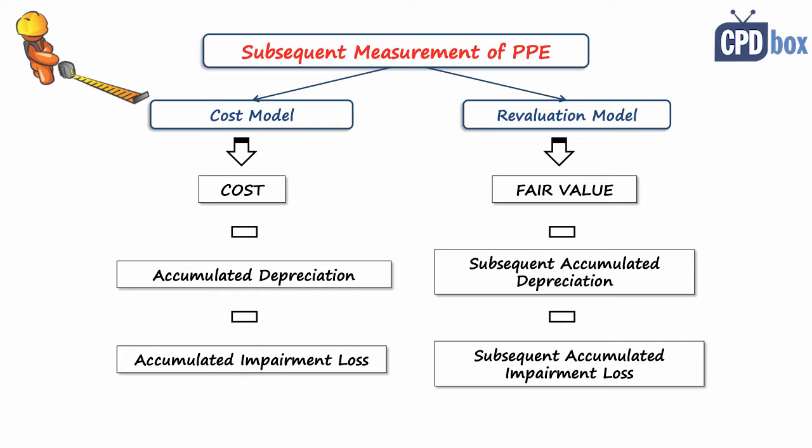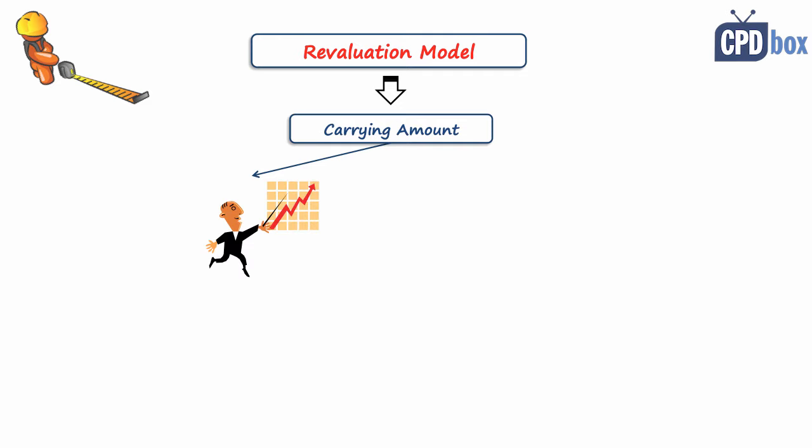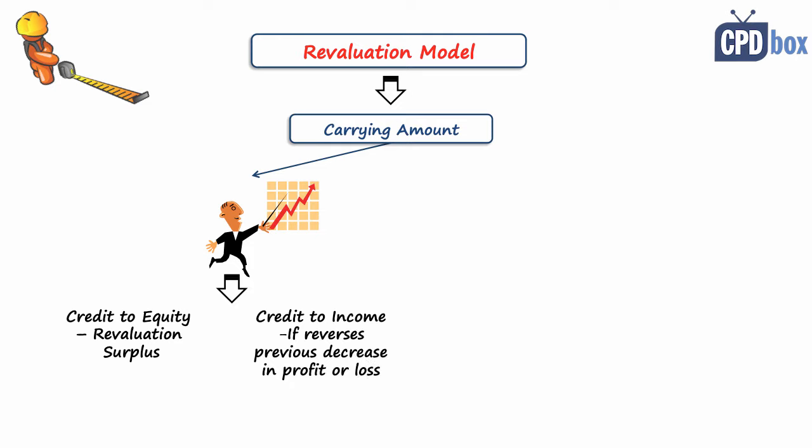And here assets shall be revalued with sufficient regularity, like each three or five years. Accounting treatment of revaluations depends on whether the carrying amount of an asset is decreased or increased. So when the carrying amount is increased, then the increase should be credited to equity under the heading revaluation surplus. But if the same asset was impaired before,